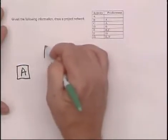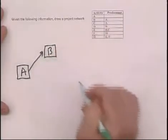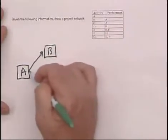As soon as A is done, B can start. And we draw an arrow to indicate that, as well as C.